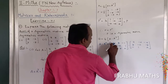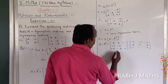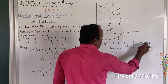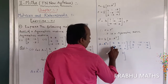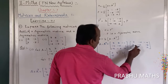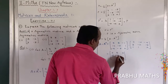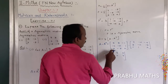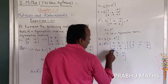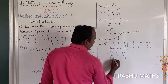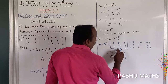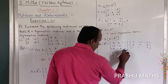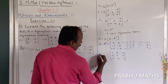Subtracting element by element: 3 minus 3 equals 0; 3 minus minus 2 equals 5; minus 1 minus minus 4 equals 3. Next row: minus 2 minus 3 equals minus 5; minus 2 minus minus 2 equals 0; 1 minus minus 5 equals 6. Next row: minus 4 minus minus 1 equals minus 3; minus 5 minus minus 6 gives minus 6; 2 minus 2 equals 0. That is A minus A transpose.